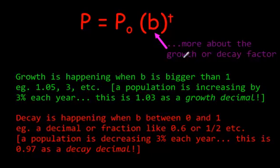Okay, so more about the growth or decay factor. If the number in here, where b is, is like 1.35, then we're going to have growth going on. Growth is happening when b is bigger than 1. So 1.35, definitely bigger than 1. If they said the population is increasing by 3% each year, this is 1.03 as a growth decimal.